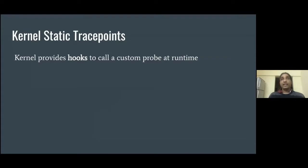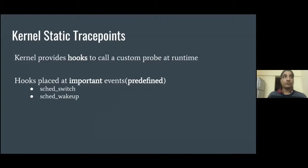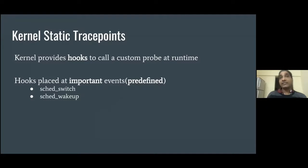In the Linux kernel, it provides various hooks at specific places to call a custom function at runtime. Basically, in the kernel code, we have accessibility to plug into those functions and define our own functions, which can get visibility into what is happening at that particular function. These hooks which the Linux kernel provides us are basically trace points. They are defined at important events and are predefined — not dynamic. These are predefined points in the code where we can plug our custom code and see what is happening in that function.